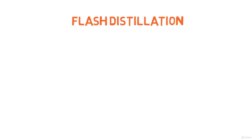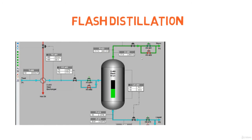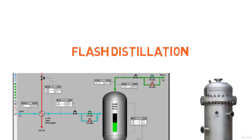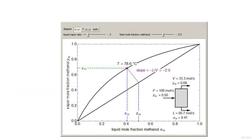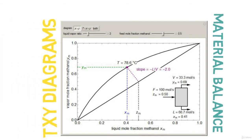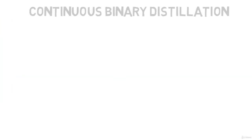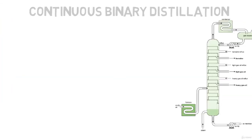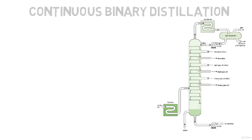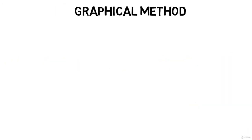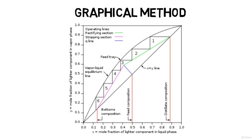Afterwards, we continue with flash distillation. We get to know how to make energy and material balances using the TXY and enthalpy diagrams. And now we're ready to model continuous distillation columns. We start with the McCabe-Thiele method, which is a graphical method used to identify the total number of equilibrium stages required for a given process.